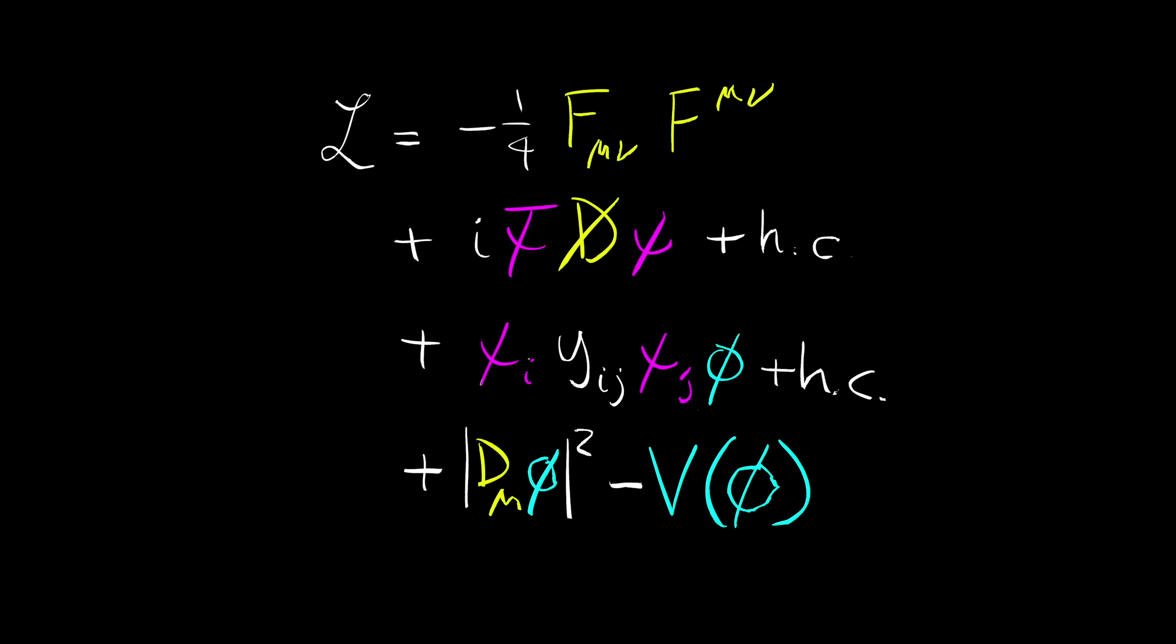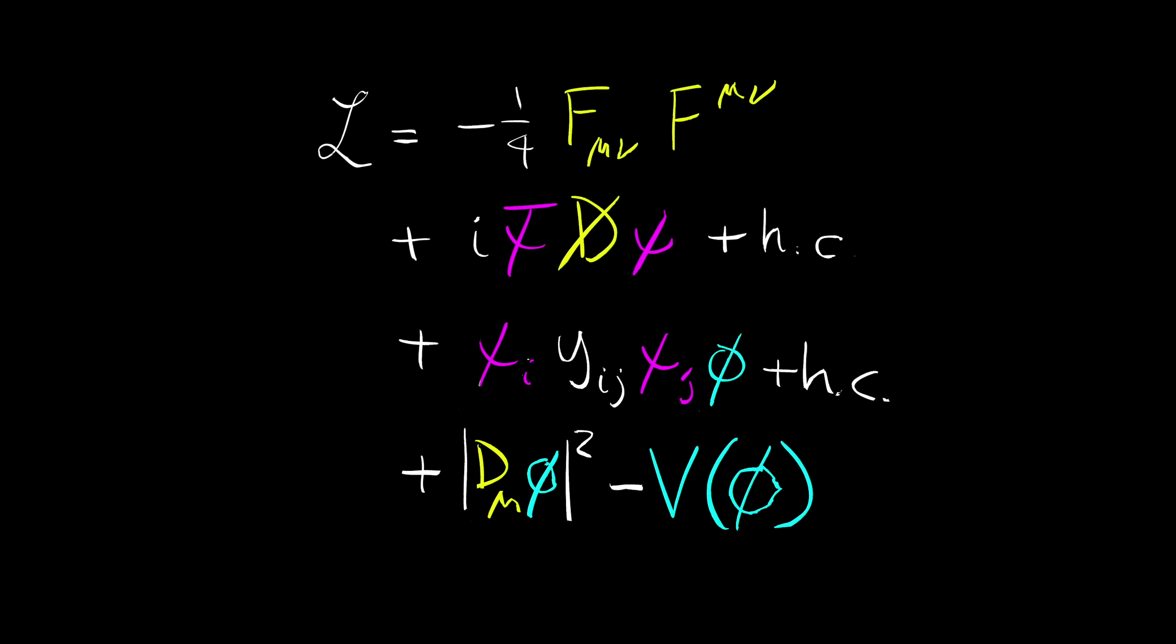Very very roughly, bits with an F or D involve the subatomic forces except for the Higgs. Those with a psi include quarks and leptons, and finally, ones with a phi involve the Higgs field. So that's the short answer.